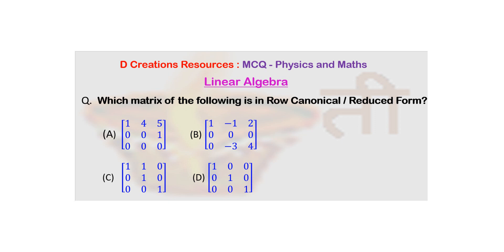What about option C? Again, you have similar logic here. If in row 2, 1 is the leading entry, then the entry above that has to be 0, which is not the case here.